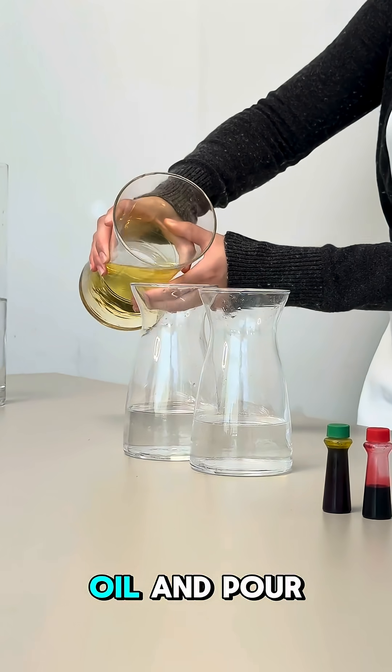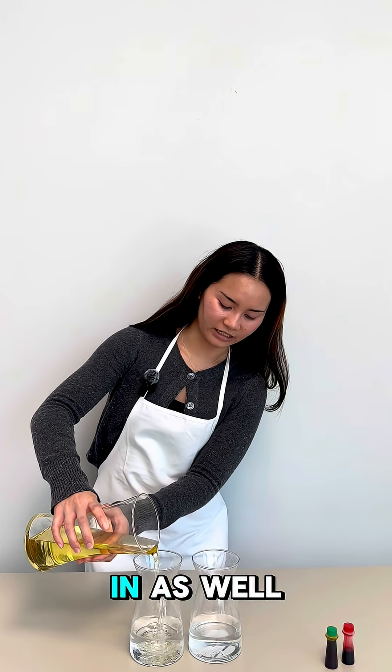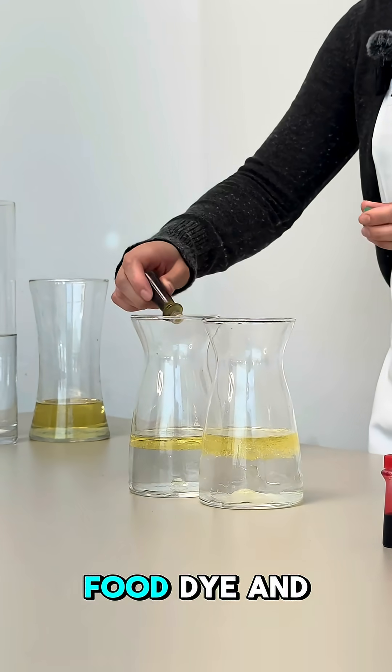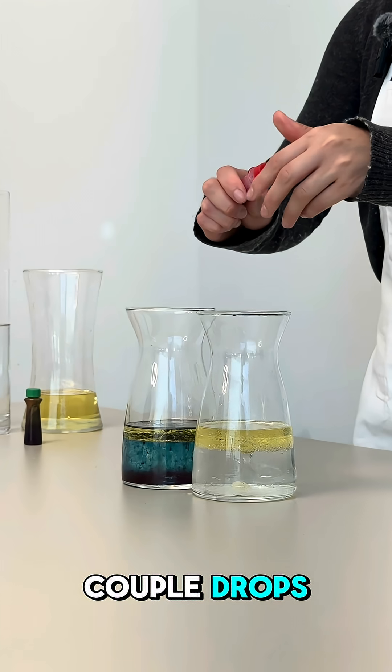Then take your oil and pour some of it in as well. Then take your food dye and put in a couple drops.